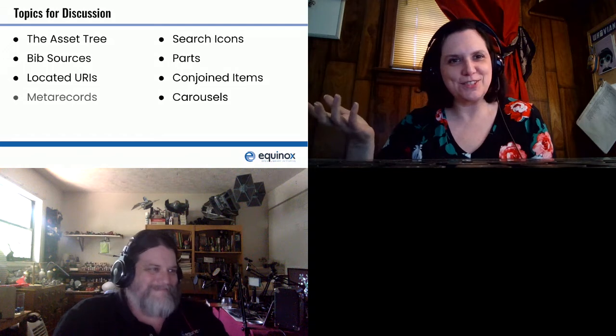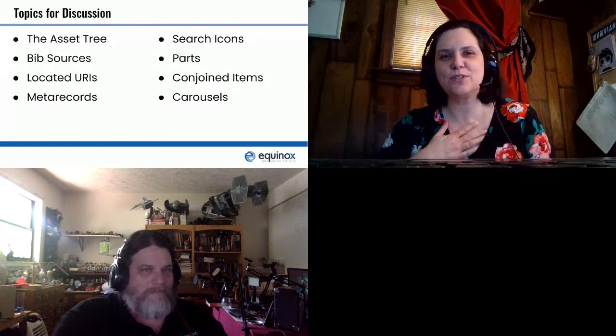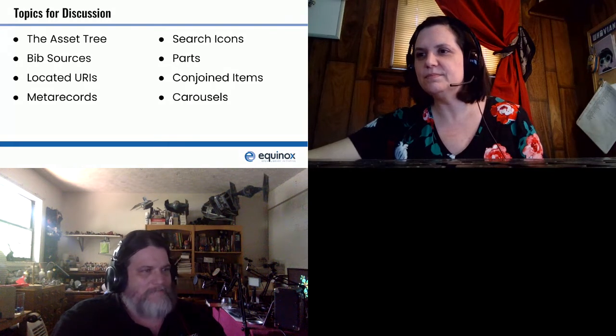Topics of discussion — we'll bounce back and forth here in a less than rehearsed way. Here's our list: asset tree, bib sources, located URIs, meta records, search icons, parts, conjoined items, carousels. They don't all go together, but they are important to talk about on their own. If you're new to cataloging in Evergreen, or you've heard about some of these but haven't had to deal with them yet, this could be useful. Feel free to ask questions as we go.